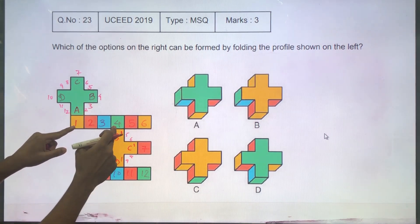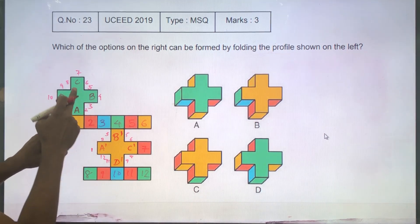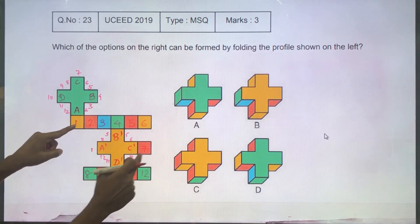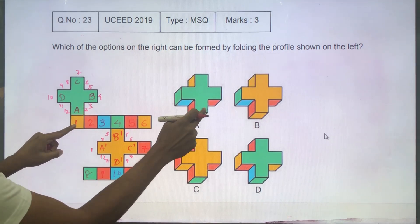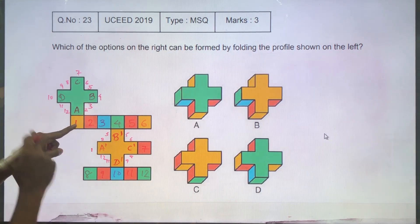So it can be A which has 1 next to it. Now B has 4 which is green, so this can't be B. C has 7 which is red, so this can't be C. And D has 10 which is blue,